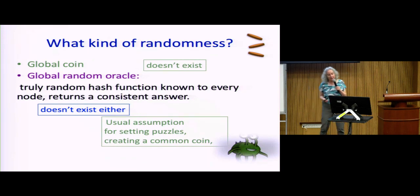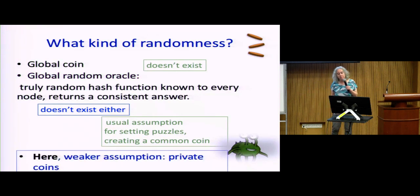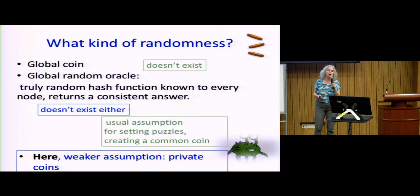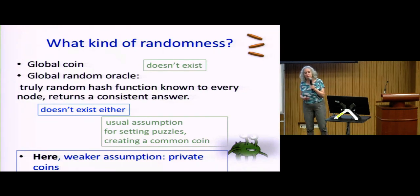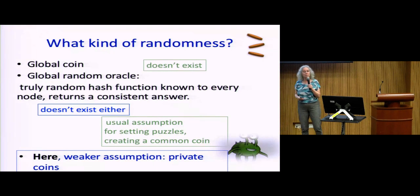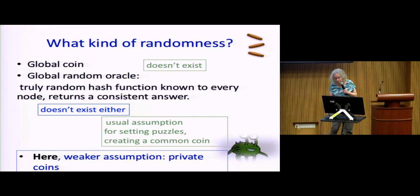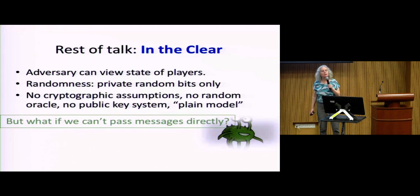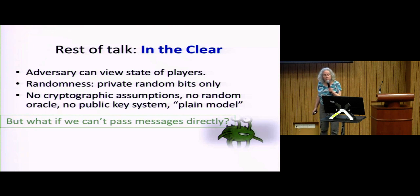In this talk we use a weaker model: every node has access to private random bits. I can get random bits, you can get your own random bits, and neither of us knows the other's. There are no cryptographic assumptions, no random oracle, no public key system. The only thing is the plain model: if A sends to B, B knows A sent it. But A can't prove to C that B sent something — there are no signed messages.